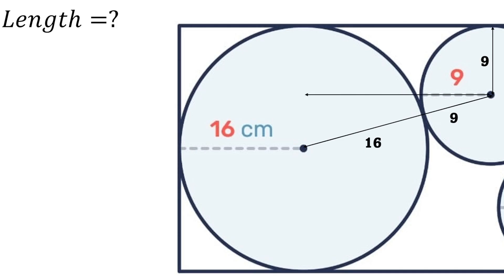That side there, which is parallel to the length of the rectangle, we're going to need to find. That's our x. Then here we know that entire part is 16, but that small part is 9 because that is parallel to the 9 from the smaller circle.